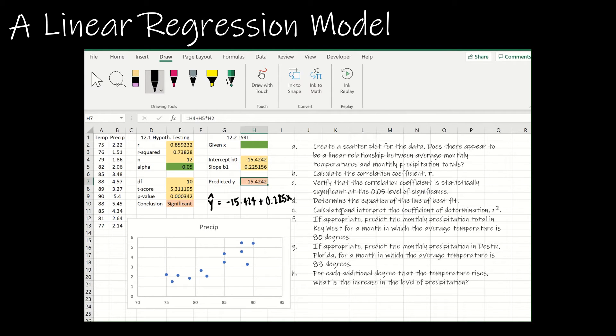Now I'm moving on to E. E says calculate and interpret the coefficient of determination. So I've calculated R squared to be 0.7382. What does that value mean? So when it says interpret, that means make sure you know what it is that you found. So what I have found is that about 73.8% of the variation in precipitation is accounted for by changes in temperature. So how much or what percent of Y is accounted for by changes in X?